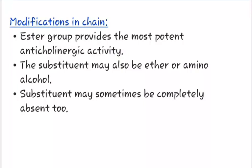Now let us study the modifications in the chain. The ester group provides the most potent anti-cholinergic activity. The substituent may also be ether or amino alcohol, but they are less potent than the ester group. The substituent may sometimes be completely absent in some compounds.